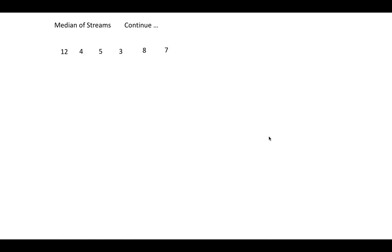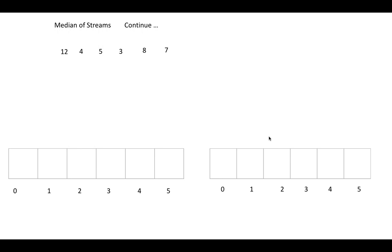Let's try to visualize with animation how we are actually going to implement it. This is our stream, and we try to process each element one by one. These are my two arrays: max heap and the min heap. As discussed previously, the heap is always represented as an array — not a binary tree, which is just for explanation purposes.